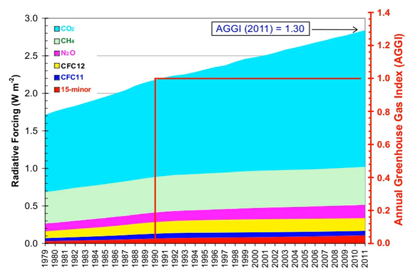Carbon dioxide has a variable atmospheric lifetime and cannot be specified precisely. The atmospheric lifetime of CO2 is estimated on the order of 30 to 95 years. This figure accounts for CO2 molecules being removed from the atmosphere by mixing into the ocean, photosynthesis, and other processes. However, this excludes the balancing fluxes of CO2 into the atmosphere from geological reservoirs, which have slower characteristic rates.